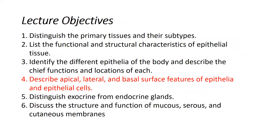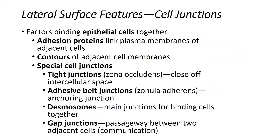Our fourth objective is describing the apical, lateral, and basal surfaces of the epithelia and the cells. Talking about the unique features of each of these surfaces, we'll start by looking at the lateral surface features.